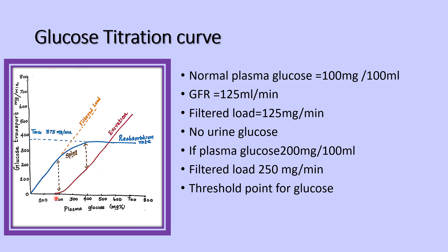The renal threshold is the level at which glucose appears in the urine. Ideally, glucose should appear in the urine above 300 mg per deciliter. But actually, when the plasma glucose reaches 200 mg, it will appear in the urine by excretion.